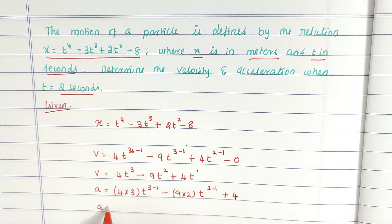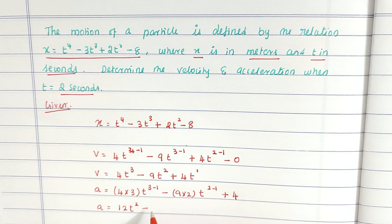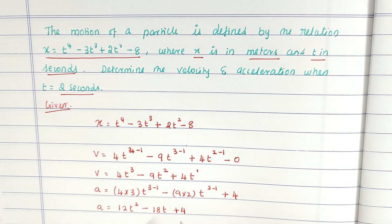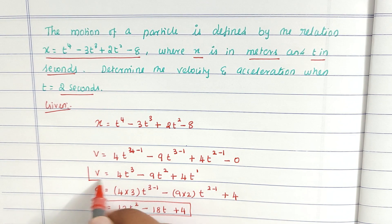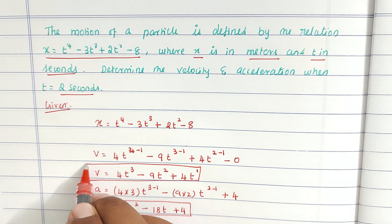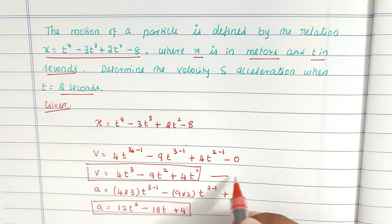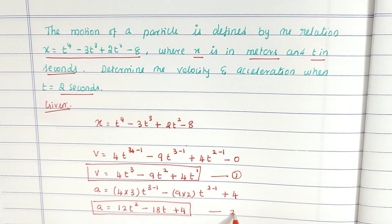So a equal to 12t power 2 minus 18t plus 4. This is the acceleration equation 2.